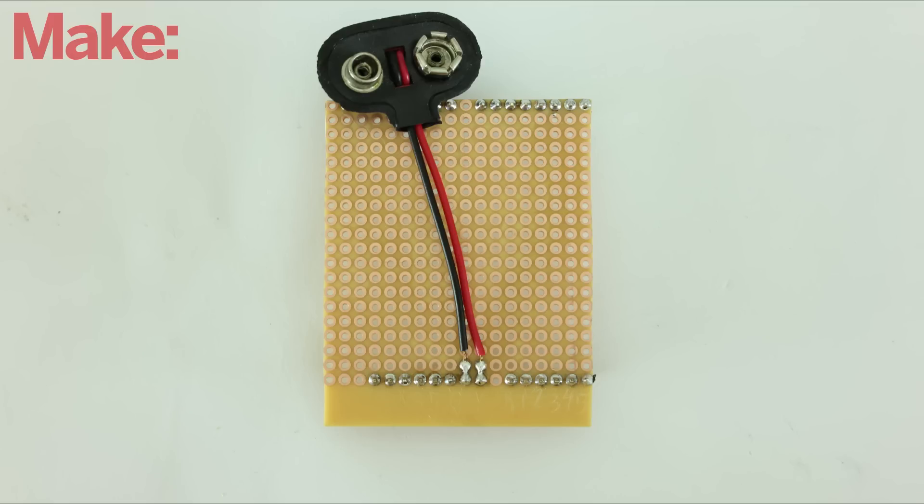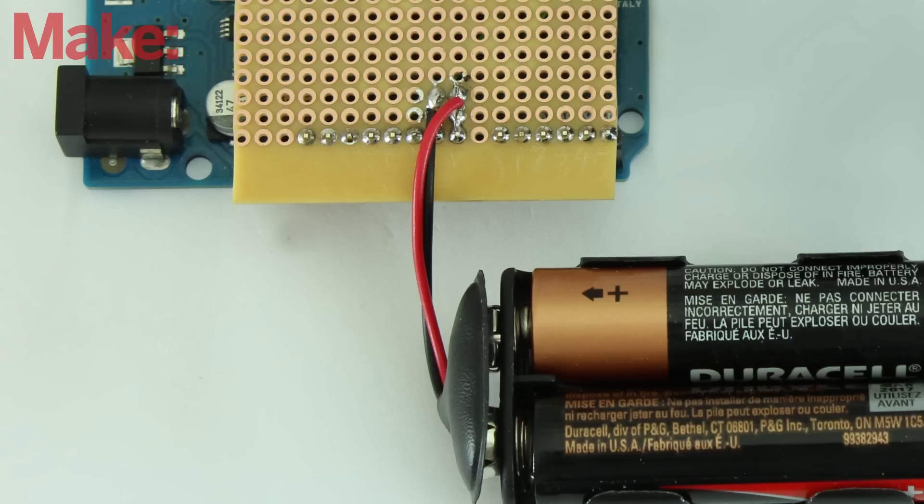First, solder a battery connector to the VN pin and a ground pin on the board. This will let you power both the board and the servos with a battery pack.